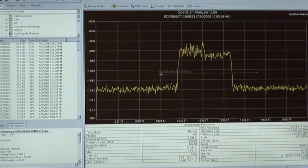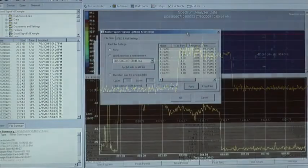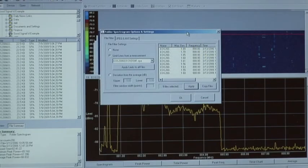Folder Spectrogram provides you with advanced features such as data filtering where you would be able to readjust limit lines to see violators in a particular band of interest, even if the original limits were set for a broader frequency range.